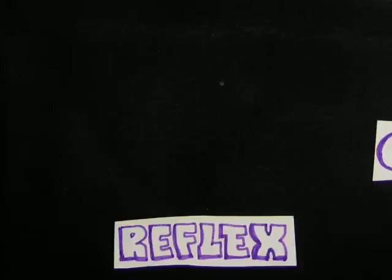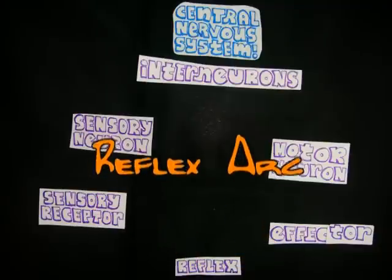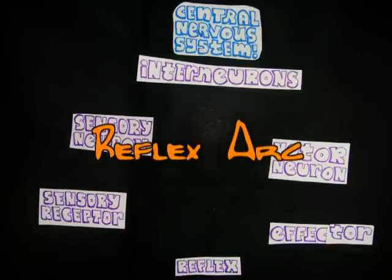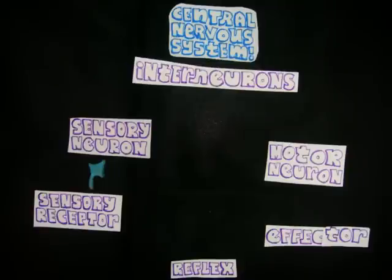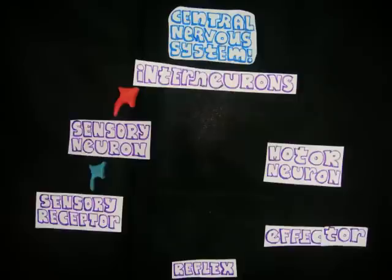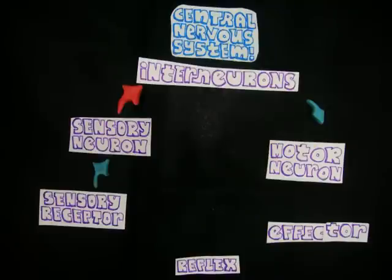A reflex is an involuntary reaction in response to a stimulus applied to the periphery and transmitted to the CNS. The neuronal pathway by which a reflex occurs is called a reflex arc. It begins with a sensory receptor. Then the sensory neurons conduct action potentials to the spinal cord, where they synapse with interneurons. They, in turn, synapse with the motor neurons and conduct signals from the spinal cord to an effector organ.